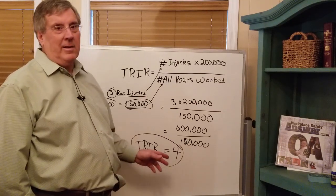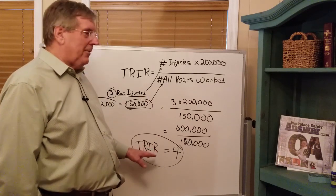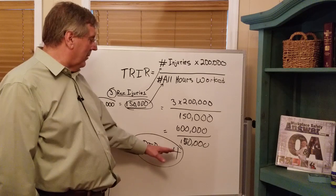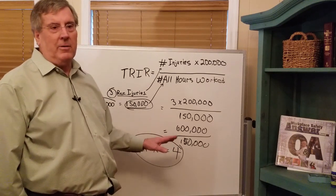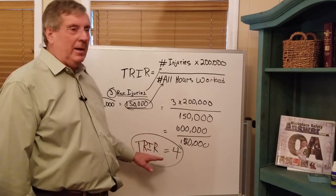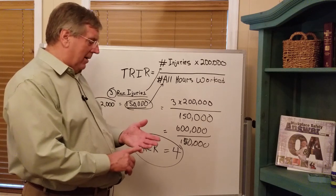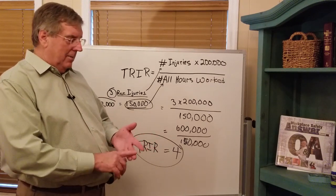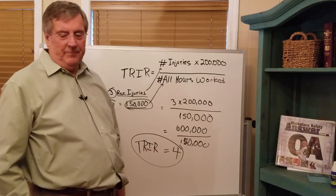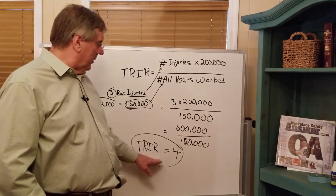Most likely it won't be 4 if you're in the roofing business. If you're a widget manufacturer, 4 is pretty close to the average for manufacturing industries. Every kind of business — healthcare, construction, manufacturing — has their own average TRIR number.